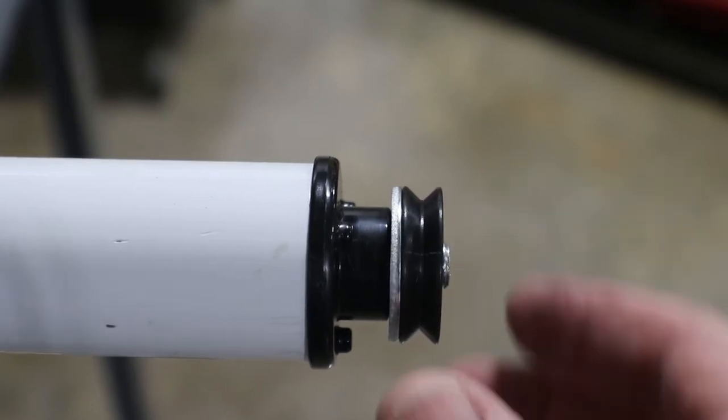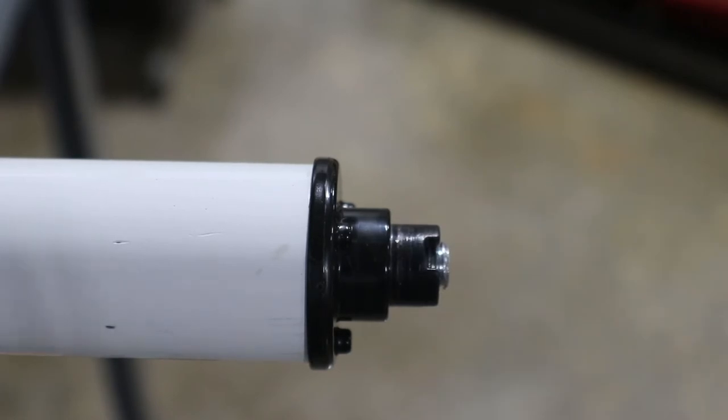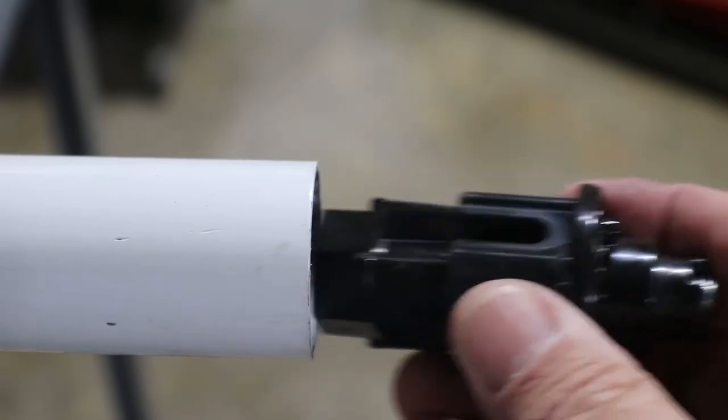You saw the small washer fall off. Now remove the grooved wheel and the larger washer. And you should be able to twist the fitting out with your hand.